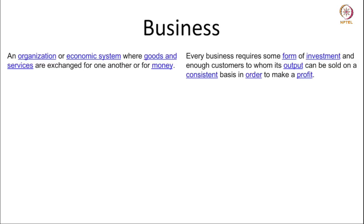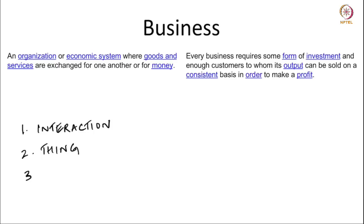A business can be defined as an organization or an economic system where goods and services are exchanged for one another or for money. We understand it as an exchange of goods and services for money or consideration. This brings a couple of things into play. We understand a business as an interaction, and this interaction pertains to a thing — there is a thing involved and this thing has value.